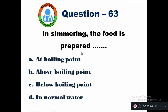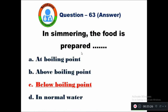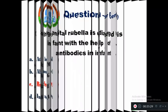Question 63: In simmering, the food is prepared at — option A boiling point, B above boiling point, C below boiling point, D in normal water. In simmering, the food is prepared below boiling point.